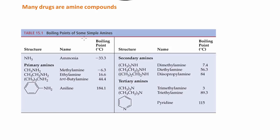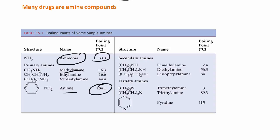This is a table showing the boiling points of some simple amines, comparing with ammonia. Ammonia has a boiling point of negative 33°C. Methylamine: negative 6.3°C. Ethylamine: 16.6°C. Notice the more carbons that are added, the higher the boiling point. Aniline has a very high boiling point of 184.1°C. These were the primary amines — similarly for secondary amines and tertiary amines, more carbons means higher boiling points.